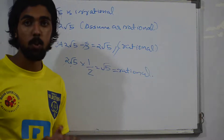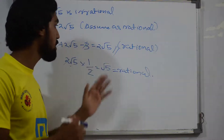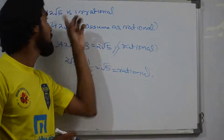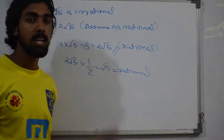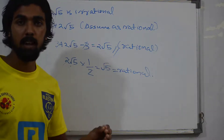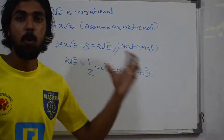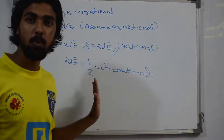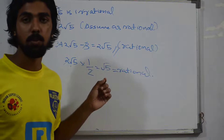This gives us root 5 as a rational number, which is a contradiction to our assumption. So our assumption that 3 plus 2 root 5 is rational is false. In this type of question, involving root 5, root 2, or root 3, we use this approach with p by q form. You have to work through it this way.